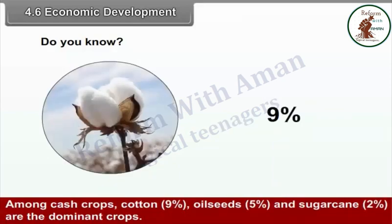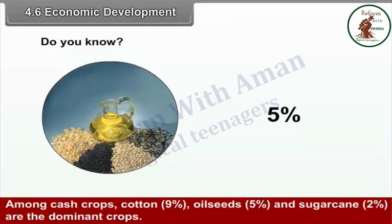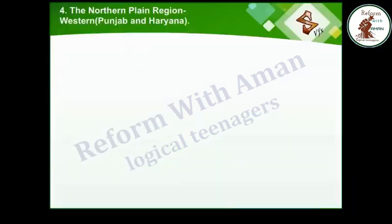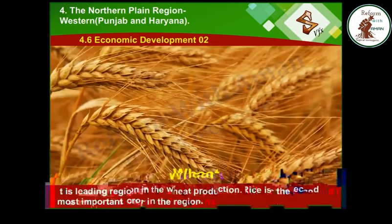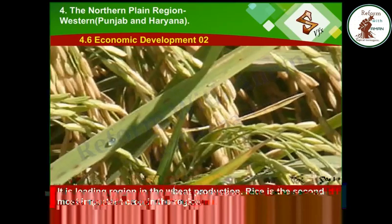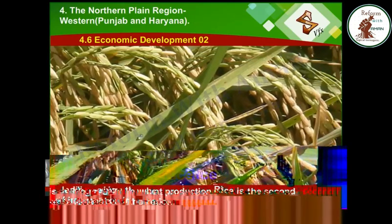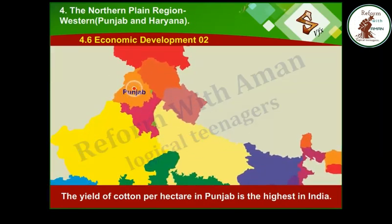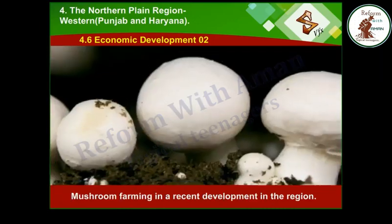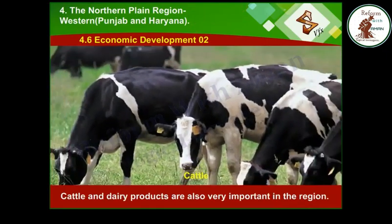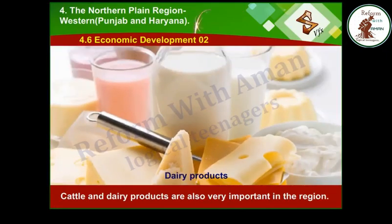Among cash crops, cotton (9%), oil seeds (5%) and sugar cane (2%) are the dominant crops. It is a leading region in wheat production. Rice is the second most important crop. The yield of cotton per hectare in Punjab is the highest in India. Mushroom farming is a recent development in the region. Cattle and dairy products are also very important.